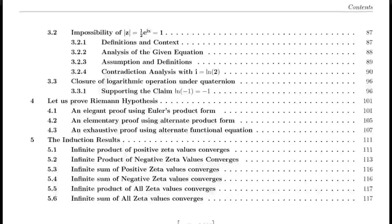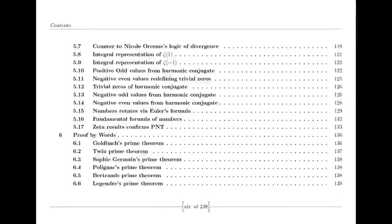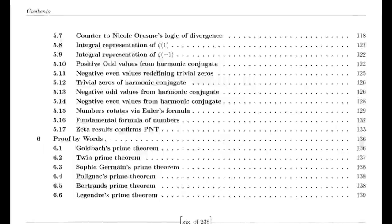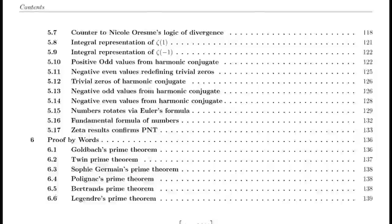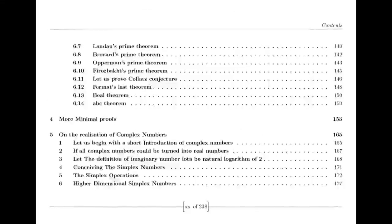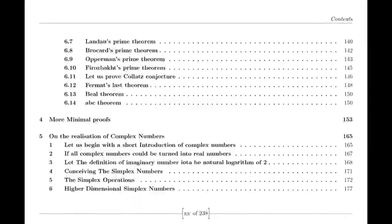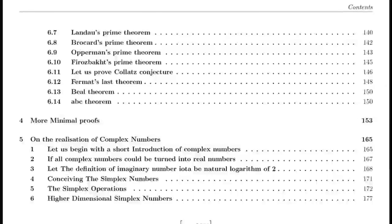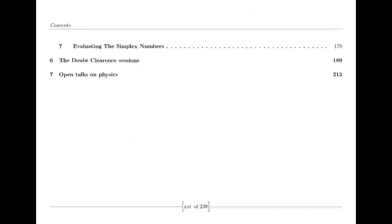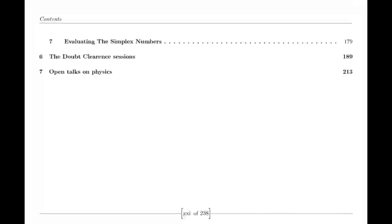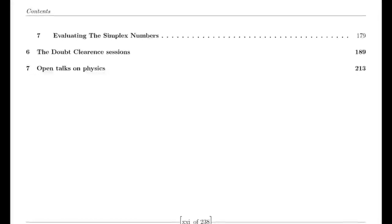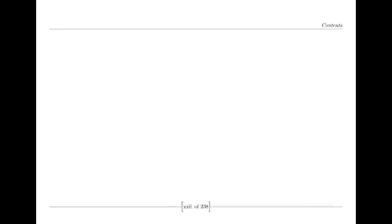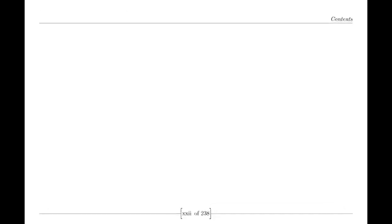Riemann was also influenced by the Dirichlet eta function, defined by an alternating series. This function is closely related to the zeta function and provides valuable insights into its behavior, particularly for values of s less than 1. The relationship between the eta function and the zeta function is encapsulated in a simple formula involving the gamma function and powers of 2, which helps in understanding the zeta function's properties across different regions.